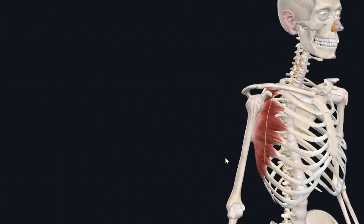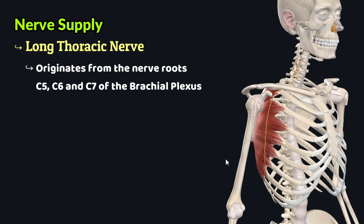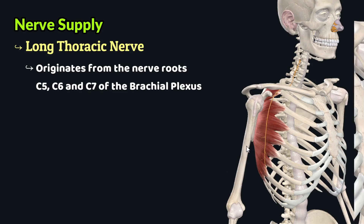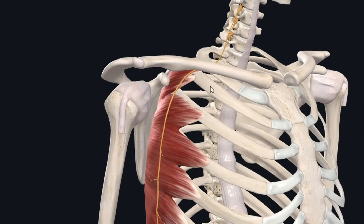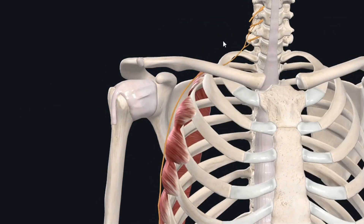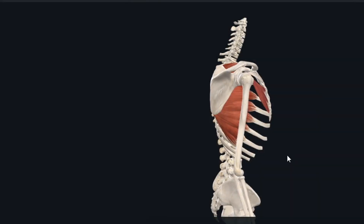The serratus anterior muscle is supplied by the long thoracic nerve, which originates from nerve roots C5, C6, and C7 of the brachial plexus, as shown here.